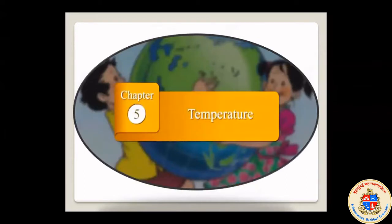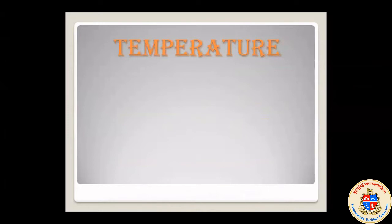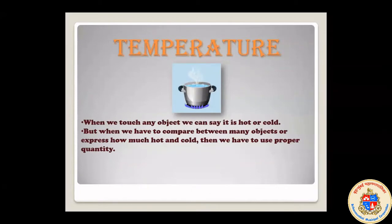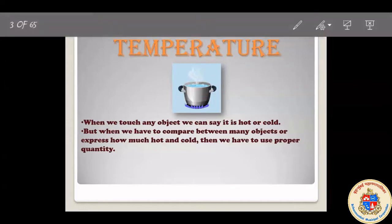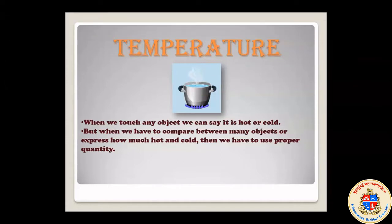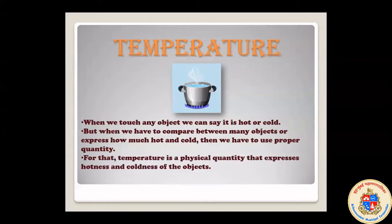The next topic is temperature. What do you mean by temperature? Temperature is hot or cold — we call it temperature. Any object we can say is hot or cold. But when we have to compare between many objects or express how much hot and how much cold, we have to use a proper quantity. Temperature is a physical quantity that expresses the hotness and coldness of an object. For example, our body temperature is 37 degrees Celsius.